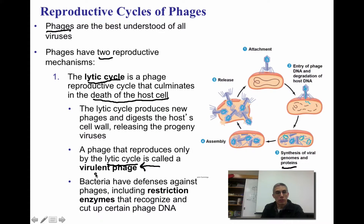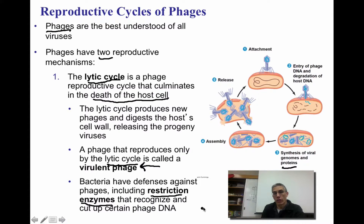Virulent is basically a word used to indicate bad — it's bad because it's going to destroy the host cell. Bacteria actually do have defenses against phages, and what they use is something called restriction enzymes. These enzymes can recognize and actually cut up certain phage DNA, possibly eliminating the production of those new viruses and protecting the bacteria from that particular phage.